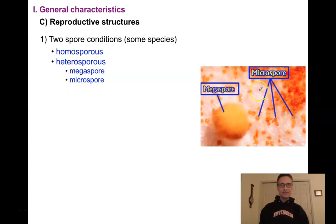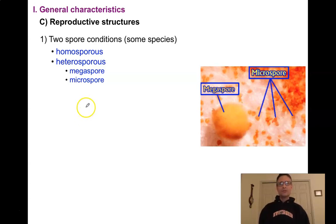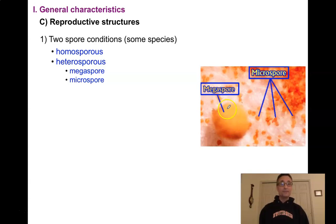The size difference between megaspores and microspores can be an order of magnitude or more. Here's an example of a megaspore compared to a microspore — you can clearly see a large size difference. When we have heterosporous plants with megaspores and microspores, it's always the megaspore that gives rise to what we consider the female plant that produces eggs, and it's the microspore that gives rise to the male gametophyte that produces sperm cells.